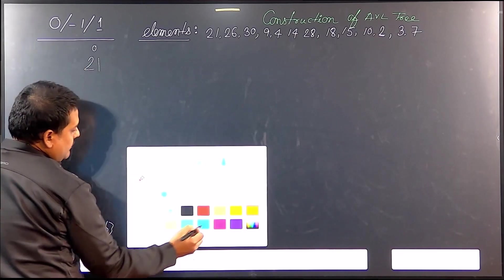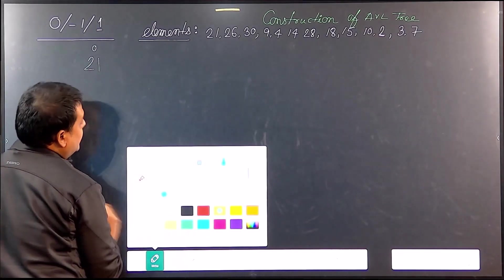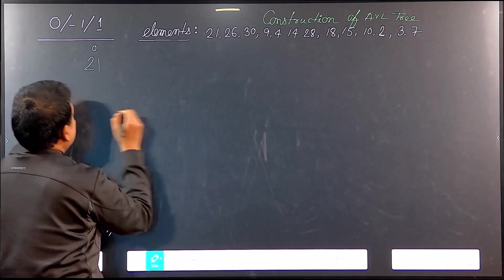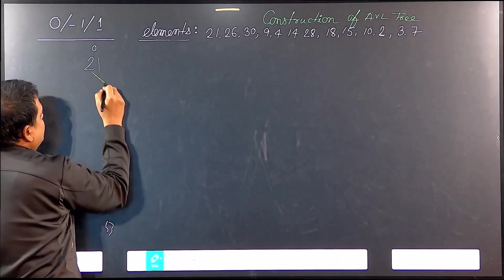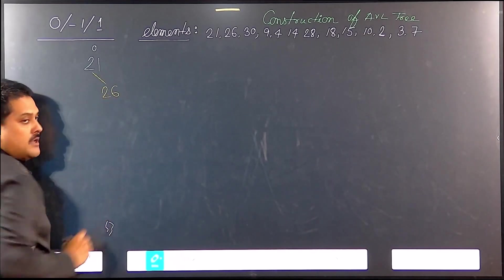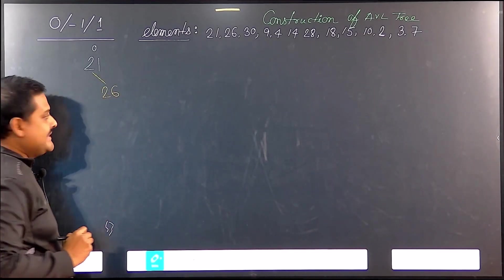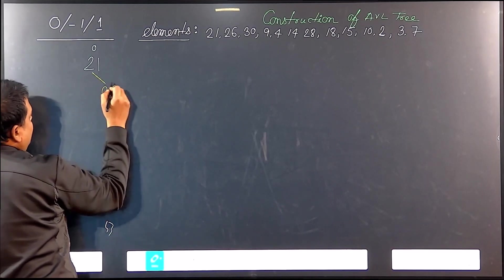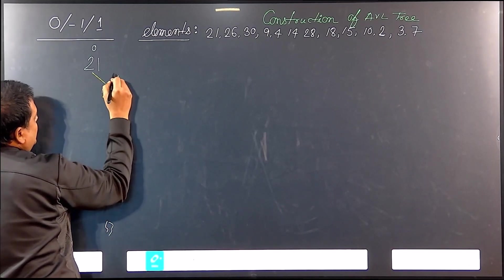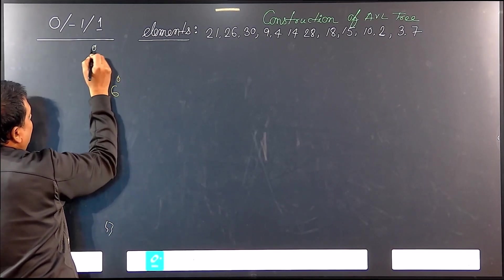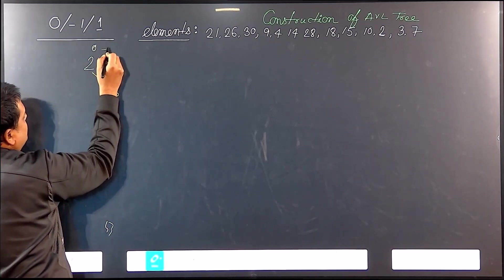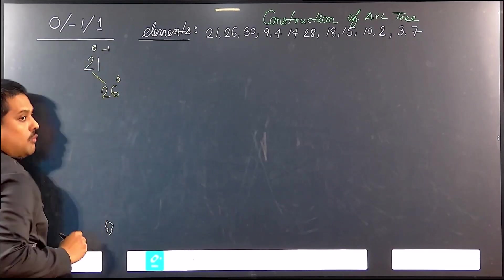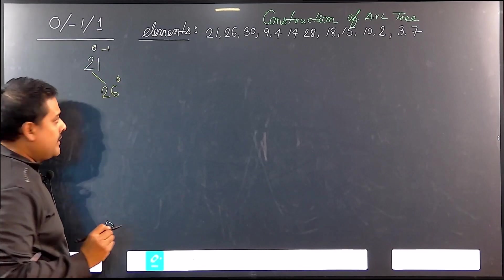We are going to insert another node, that is 26. So 26 will be to the right of it. 26 is inserted. The balance factor for 26 is 0, and for 21 this is minus 1. No problem.